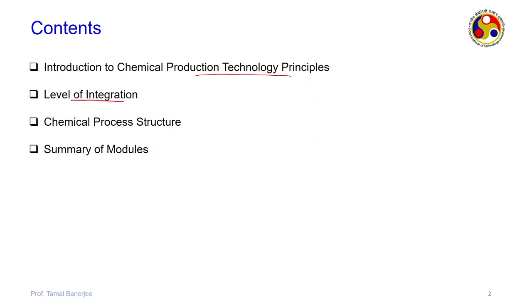The levels of integration primarily refer to time scale and length scale. The time scale and length scale are very important because whether a particular reaction or any process is going on at the nano regime, the macro regime, the meso regime, or the actual plant level — that is what we will discuss.